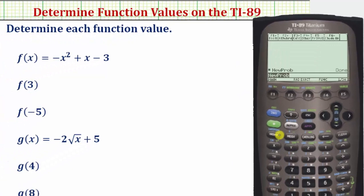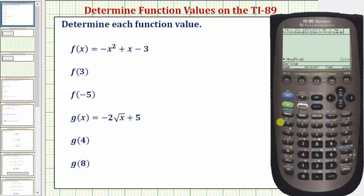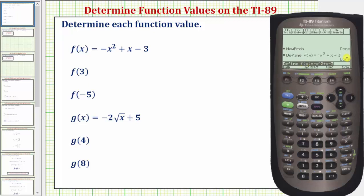Let's go back to the home screen and now define the functions f of x and g of x. We define a function from the other menu, so we press F4, number one for define. Notice above the vertical bar is an F, so we press alpha vertical bar for F, then parenthesis x equals negative x squared plus three x minus three. So negative x raised to the power of two plus x minus three, enter. And now the function f of x is defined.